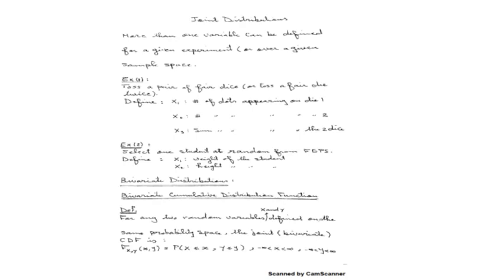The definition is the probability that X takes values less than or equal to little x, and the random variable Y takes values less than or equal to little y, where x and y range from minus infinity to infinity. This definition applies whether the random variables are continuous or discrete. The difference is only in how you obtain this function: for discrete random variables you use summation, and for continuous random variables you use integrals.